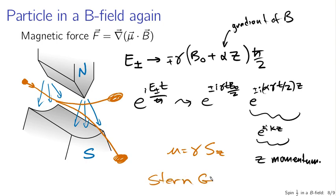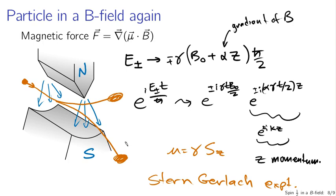The Stern-Gerlach experiment gives something deeply non-intuitive from a classical physics perspective, which would predict a broad continuous distribution of deflections. This experiment was first done in 1922 and was very important for kicking off the development of quantum mechanics — before the Solvay conference of 1926–1927 when quantum mechanics was first fully developed. It was a very obvious experimental indication that something is very wrong with classical physics, and now we know how to explain it using the formalism of the spin one-half quantum mechanical system.